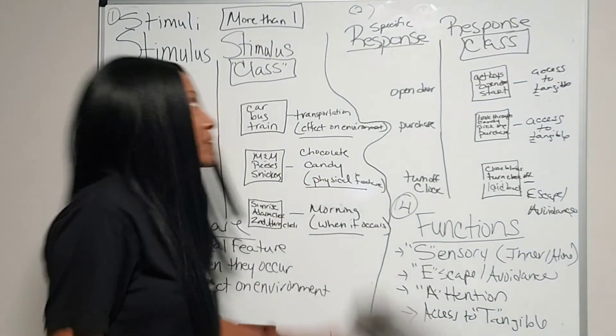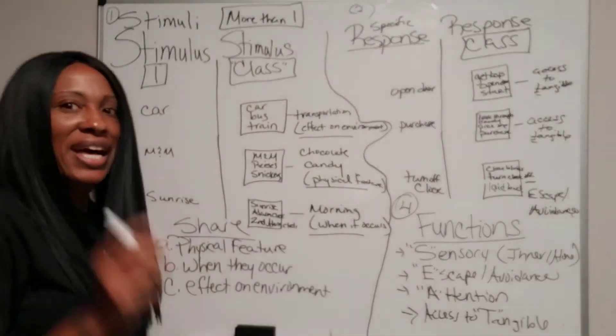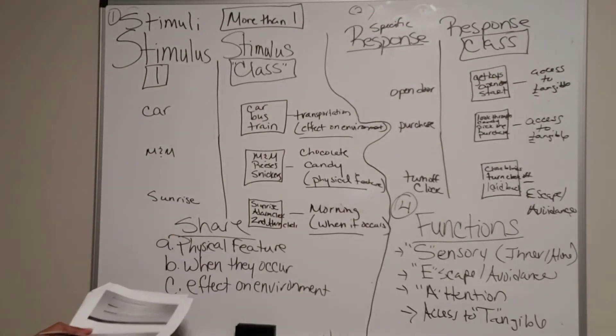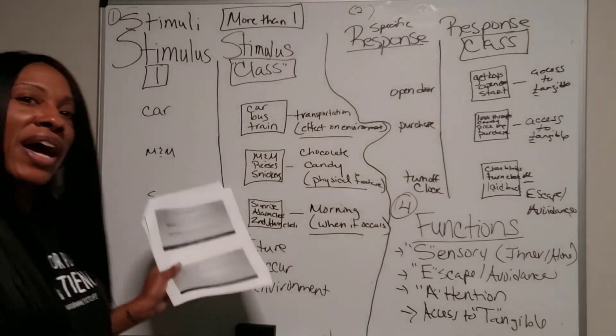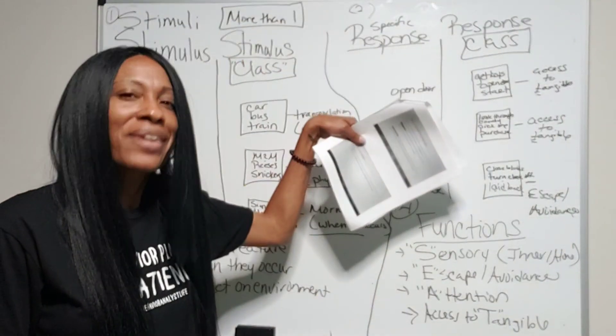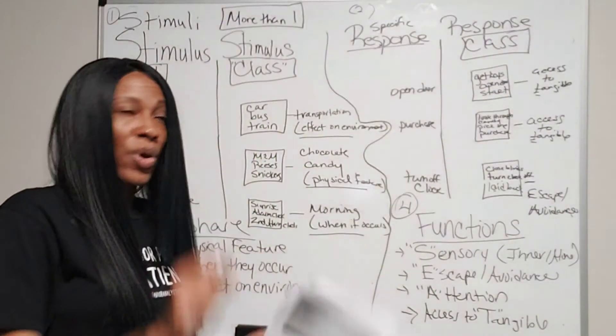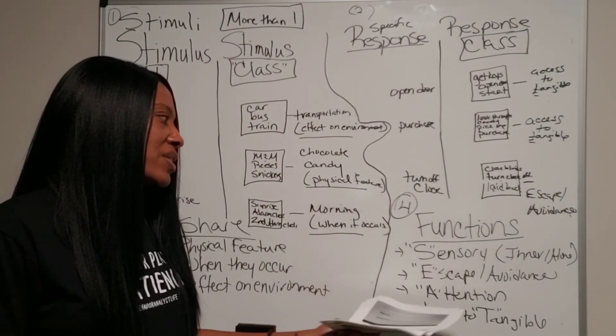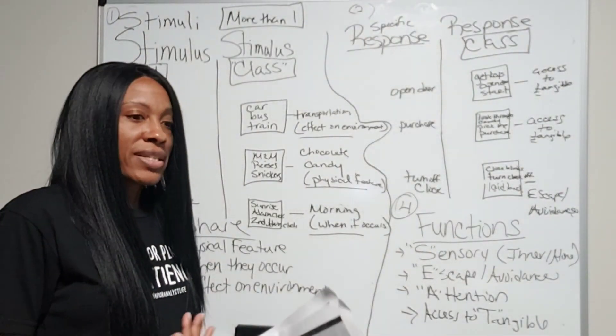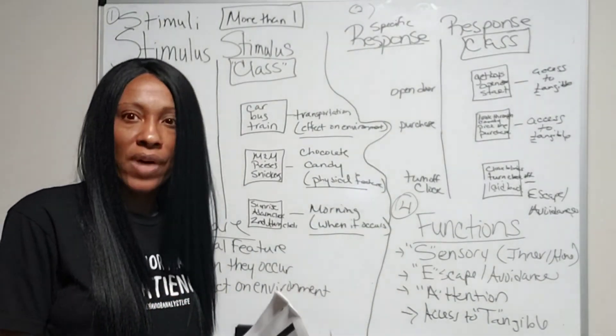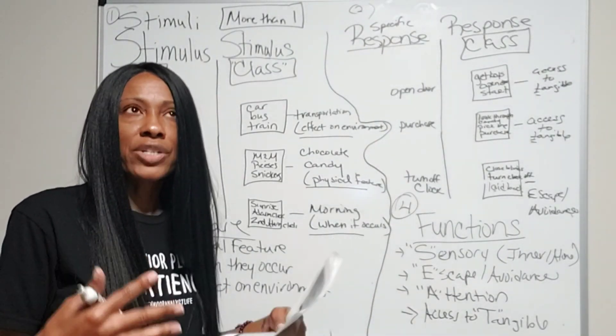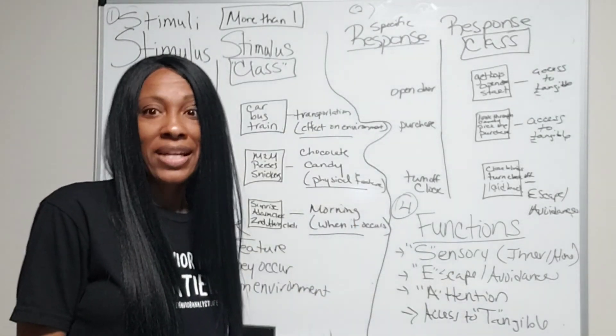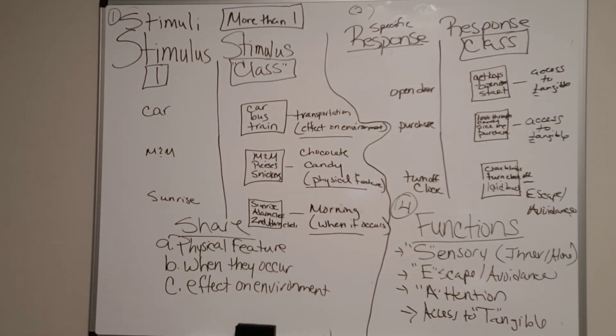But not to get off the subject, remember that stimulus is one. Stimulus class is multiple. They share a physical feature, when they occur, or their effect on the environment. If you have a stimulus, then you need to have a response. A response by itself, one. Response class, multiple responses. But they're going to share the same functions. Sensory, escape, attention, access to tangible. Or it could share a function as into getting you where you're going. Or a function of helping you fall asleep. So they can share a function that's similar to the effect that it's having on the environment. So I'll give you a second to look at that. And I hope it ties it up and makes a little bit more sense. And I'll see you in a little bit to talk about stimulus. Thank you.